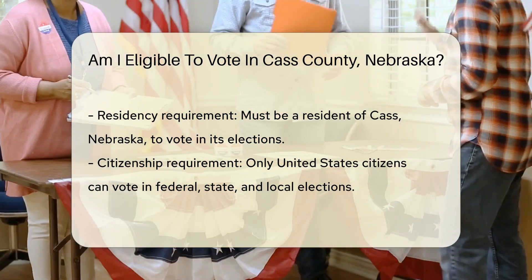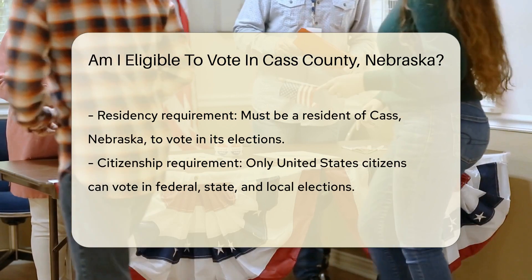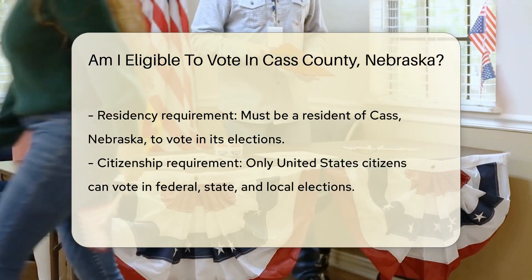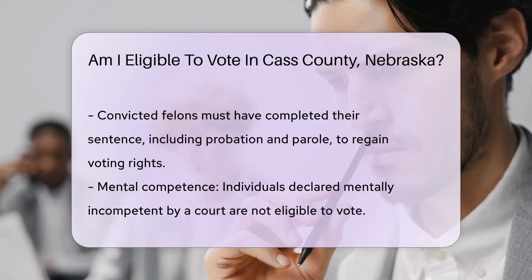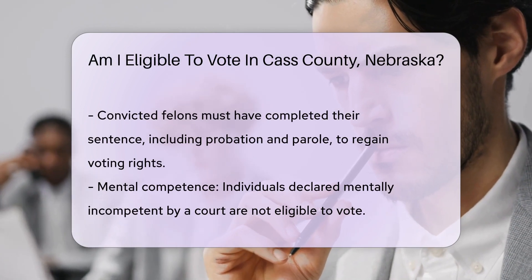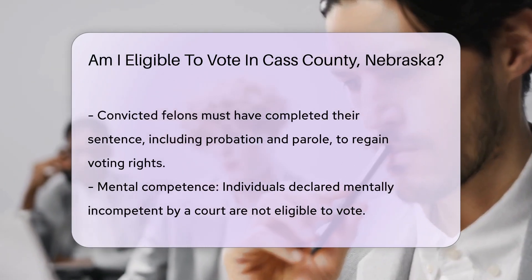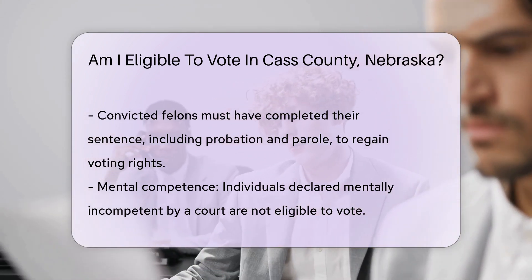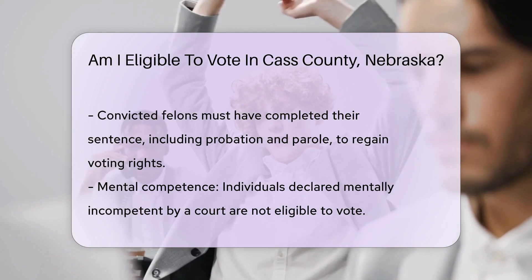Citizenship status is also essential. Only United States citizens can vote in federal, state, and local elections, aligning with the principle that American elections should be determined by Americans. Additionally, you must not be a convicted felon, or if you are, you must have completed your sentence, including probation and parole, to regain your voting rights.